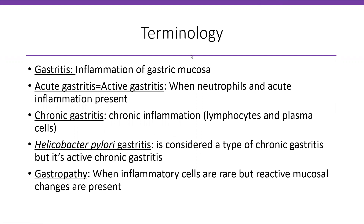Let's go over terminology. Gastritis is inflammation of gastric mucosa — 'itis' always means inflammation. Acute gastritis, or active gastritis, is when neutrophils are present and you have acute inflammation. These terms 'active' and 'acute' have been used interchangeably in gastrointestinal disorders. Whenever you hear the word 'active,' it means there is active injury happening, and most commonly for pathologists it means neutrophils and acute inflammation.